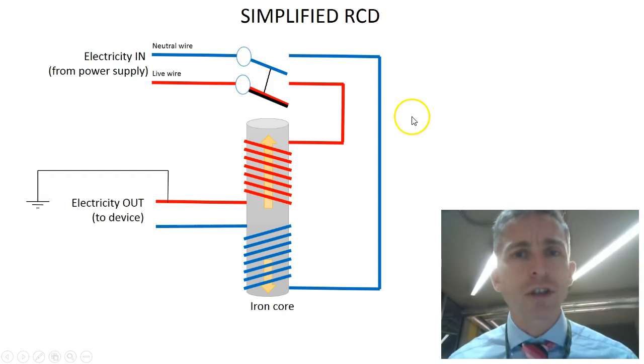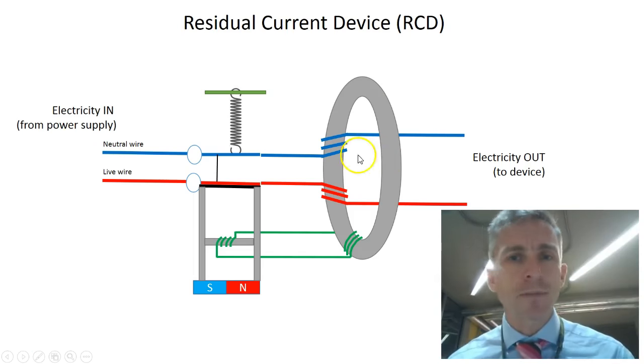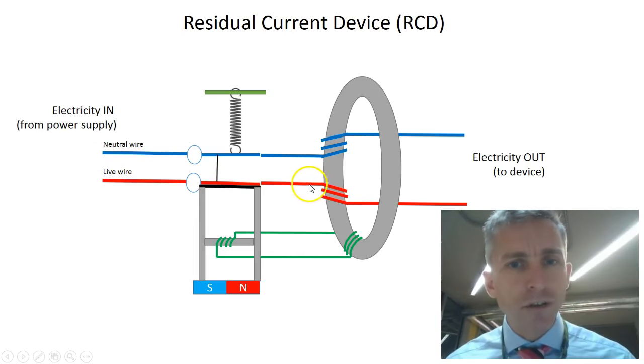Now that's a simplified version of an RCD. And I want to show you a diagram here of an actual design. I've only drawn a few coils, but the principle is pretty much the same. Electricity is supplied down the live wire and it goes through some coils and then off to the device. And it returns along the neutral wire through some coils again, wound in the other way this time, and back through here. And here is the switch gear.